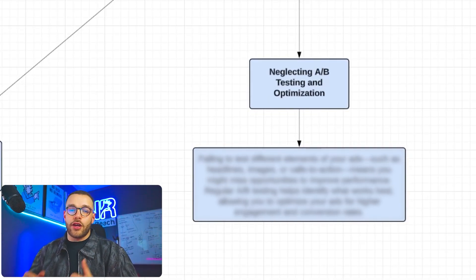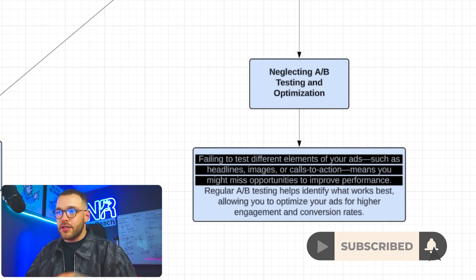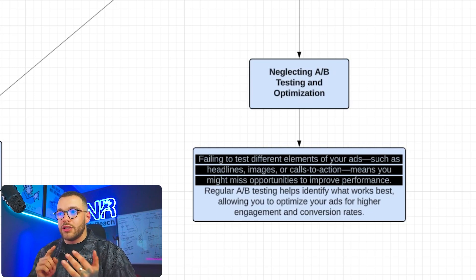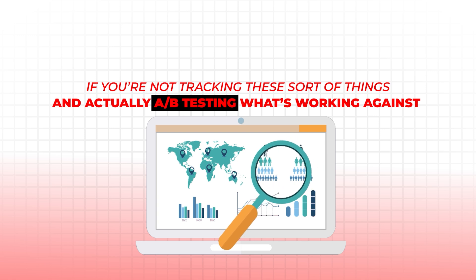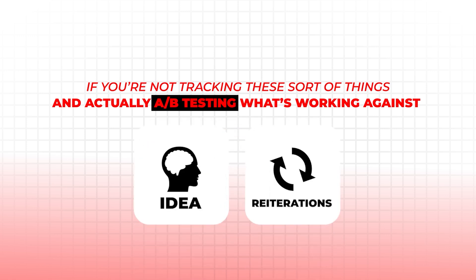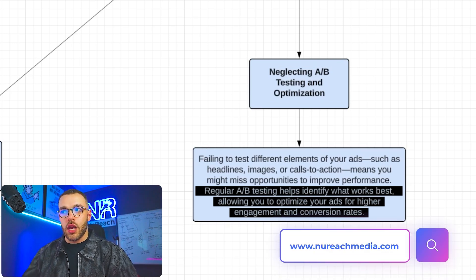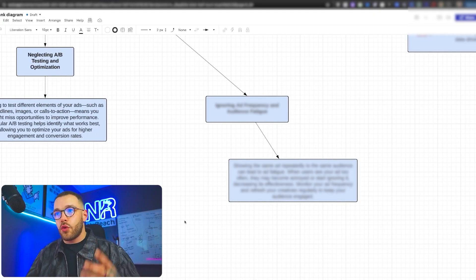Number three is super simple: neglecting A/B testing and optimization. If you're failing to test different elements of your ads and creatives — such as headlines, hooks, images, and calls to action — you're missing out on opportunities to improve performance. If you're not tracking these things and A/B testing what's working against new ideas or iterations, you're basically saying you're comfortable with your current performance and not shooting for anything higher. You need to be A/B testing all elements of your creatives frequently and consistently.